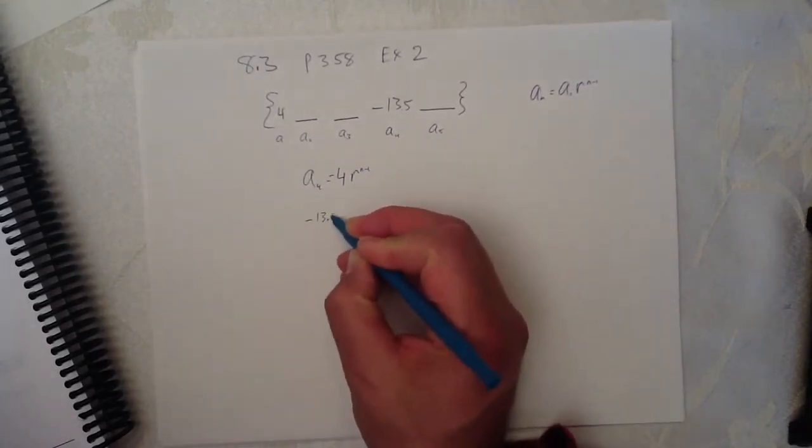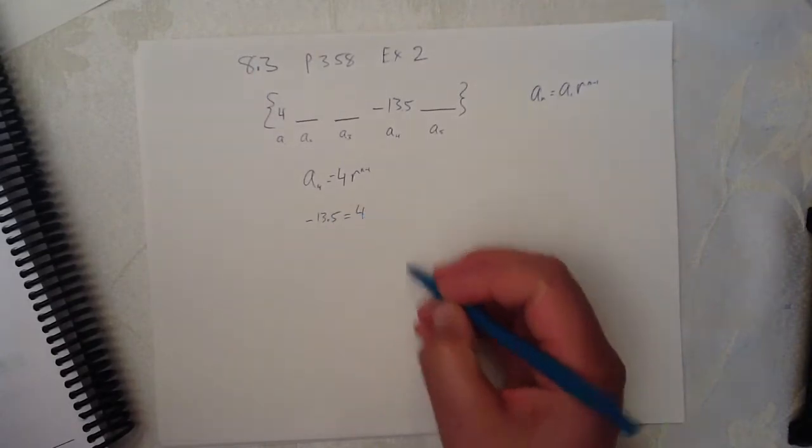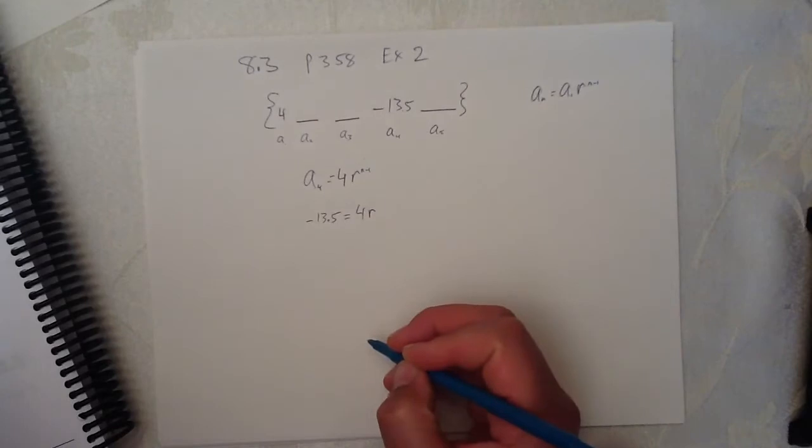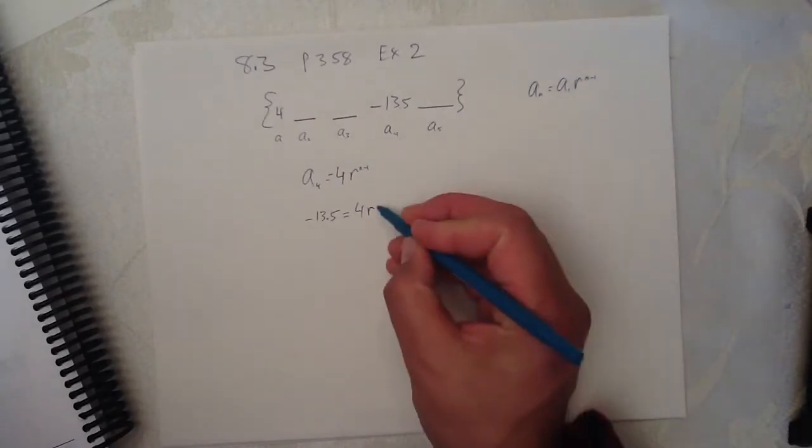For A4, which is something we know, is four times R to the n minus one. So, A4, which is negative thirteen point five, because they give us that, equals four, which is A1, times R, which we don't know, to the n minus one. In this case, n is four, so it must be cubed.